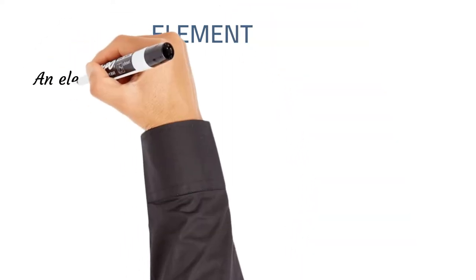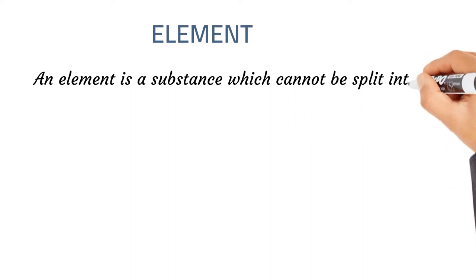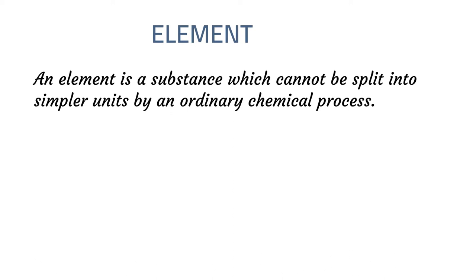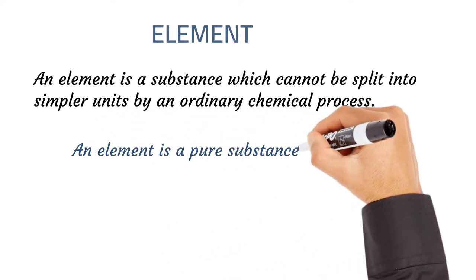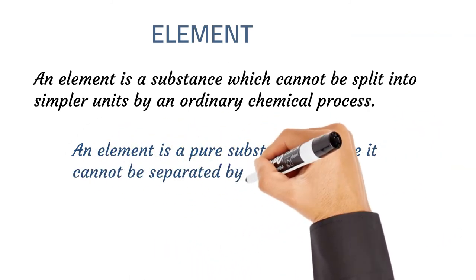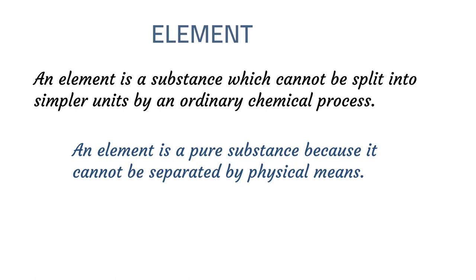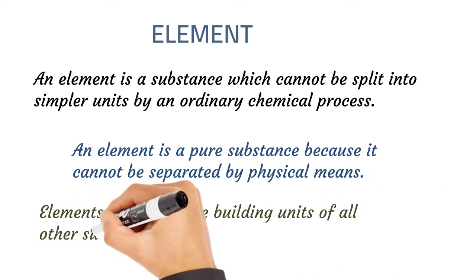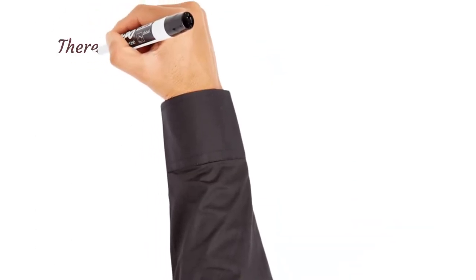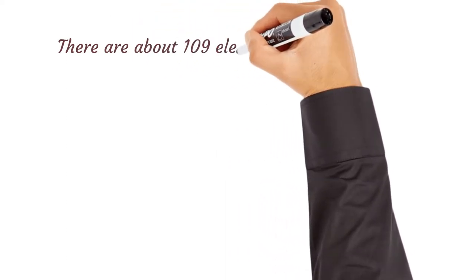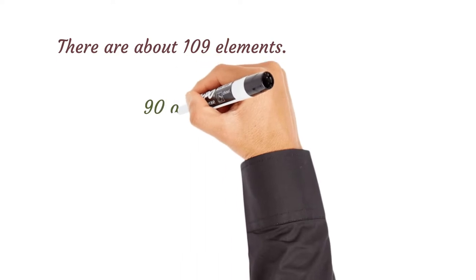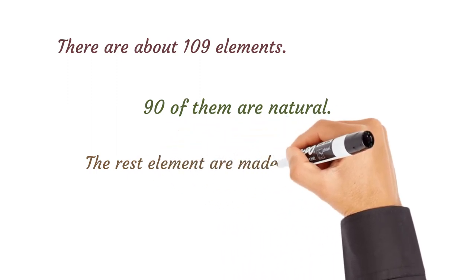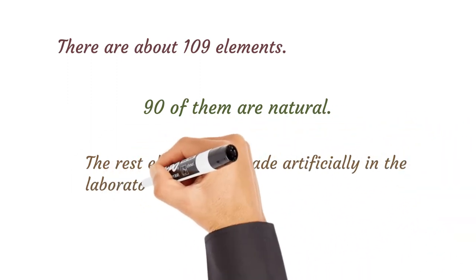Elements: An element is a substance which cannot be split into simpler units by an ordinary chemical process. An element is a pure substance because it cannot be separated by physical means. Elements constitute the building units of all other substances. There are about 109 elements—90 of them are natural. The rest are made artificially in the laboratory.